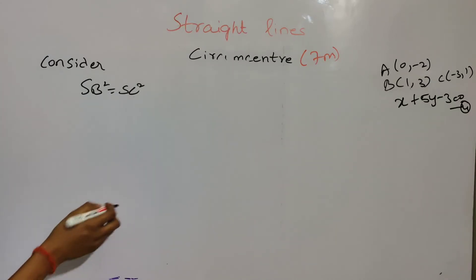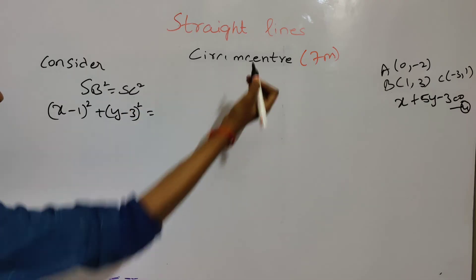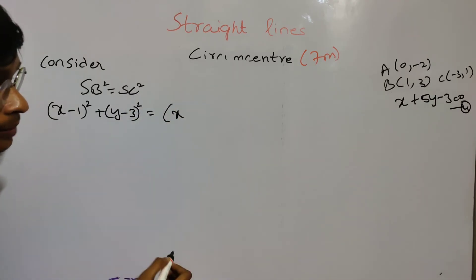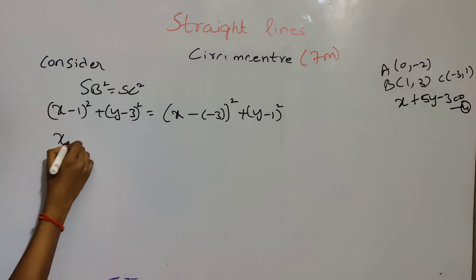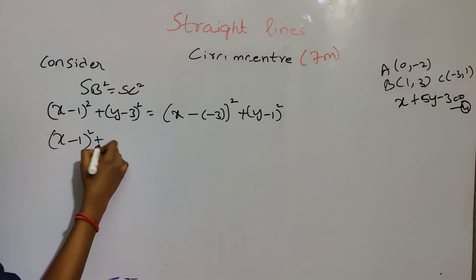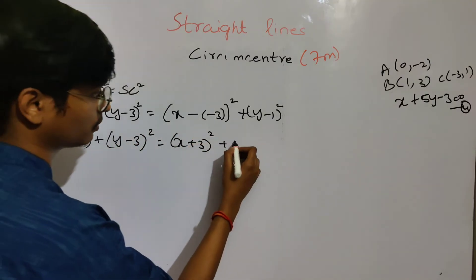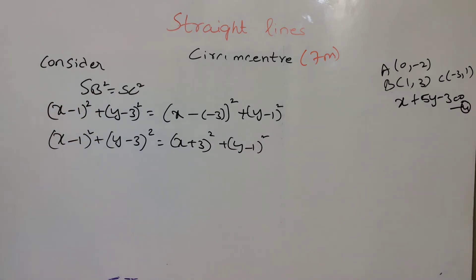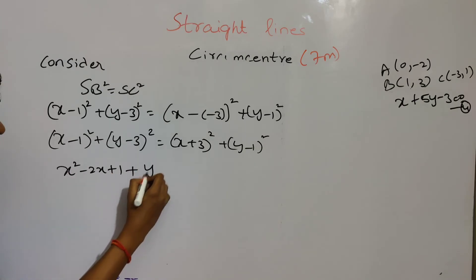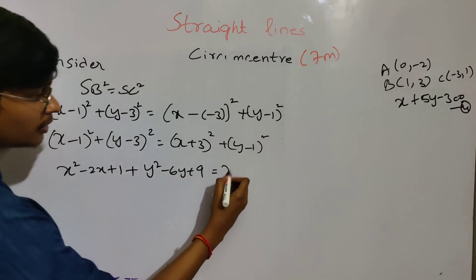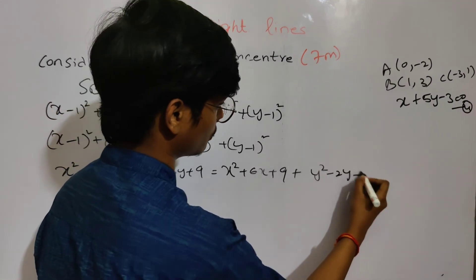Now we will get equation 5 using the same formula. x minus 1 whole square plus y minus 3 whole square equals to x plus 3 whole square plus y minus 1 whole square. Expanding: x squared minus 2x plus 1 plus y squared minus 6y plus 9 equals x squared plus 6x plus 9 plus y squared minus 2y plus 1.